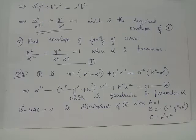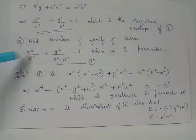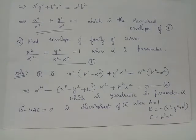Find the envelope of the family of curves x² / α² + y² / (k² - α²) = 1, where α is the parameter and k is a constant.